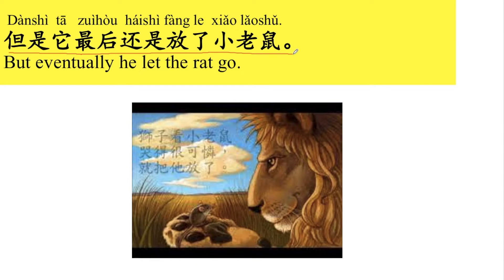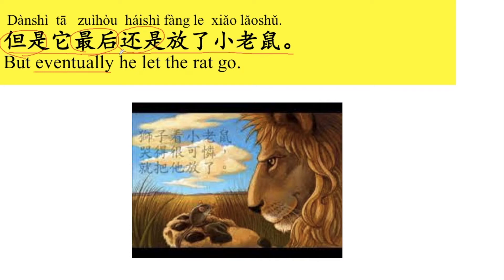但是它最后还是放了小老鼠。但是 means but. 虽然他不相信小老鼠会救得了自己，但是狮子最后还是放了小老鼠。最后 means eventually. 还是 here means still. 放 — we said it means release.